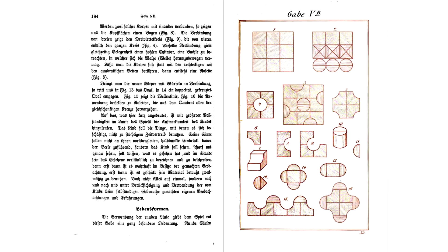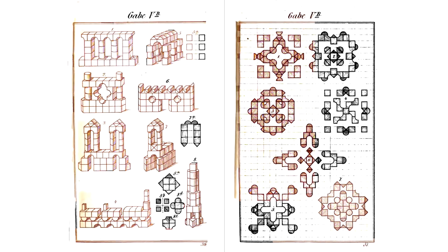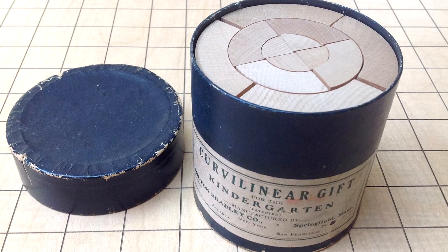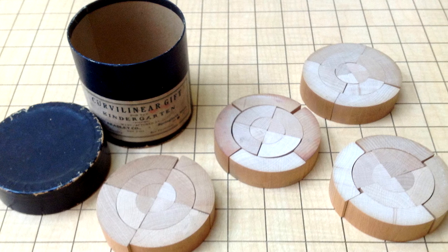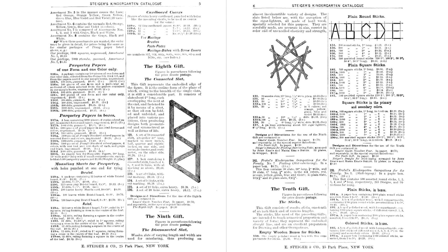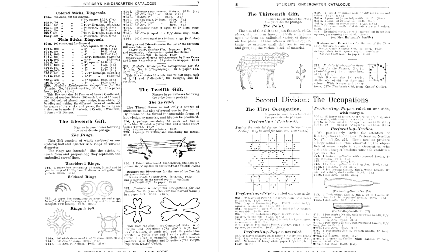But they also introduced their own ideas about these materials. So for instance, Herman Goldhammer developed Gift 5B. Milton Bradley developed the curvilinear gift. So it was essentially businessmen who expanded these materials and added more. So people come to me all the time and they say where's Gift 11? Where's Gift 13? I thought there were 20 gifts. There really are only six gifts, but there are many other materials that can be used in Froebelian Way. And let me show you some of those now.